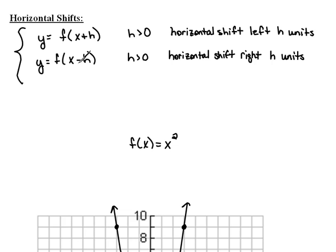If we are subtracting h inside with x, now again it says h is greater than 0, but that means you're subtracting a positive number, not a negative number. Then we have a horizontal shift right of h units. So when we add or subtract something inside the function, not outside, remember outside created a vertical shift. This is inside the function. This is what causes a horizontal shift. So, let's look and see what we're talking about here.